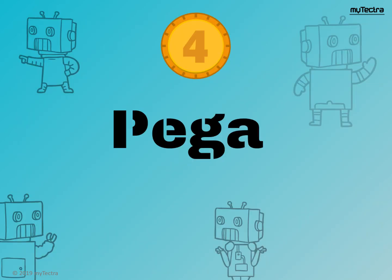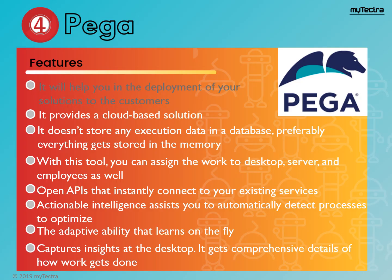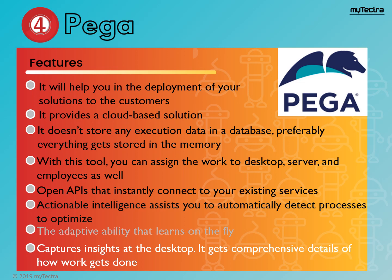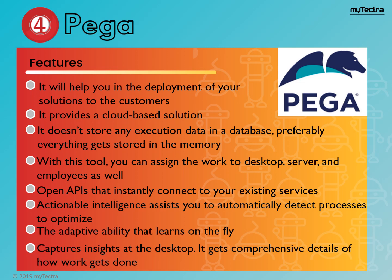Number 4 is Pega. Pega system automation tool supports all usage scenarios. It can be utilized on desktop servers. It affords only cloud-based solutions or services. It can operate on Windows, Linux, and Mac. This tool is suitable for medium and large enterprises. Pega features: it will help you in the deployment of your solutions to customers. It provides a cloud-based solution. It doesn't store any execution data in a database — preferably, everything gets stored in memory. With this tool, you can assign the work to desktop servers and employees as well. Open APIs that instantly connect to your existing services. Actionable intelligence assists you to automatically detect processes to optimize. The adaptive ability that learns on-the-fly captures insight at the desktop. It gets comprehensive details of how work gets done.